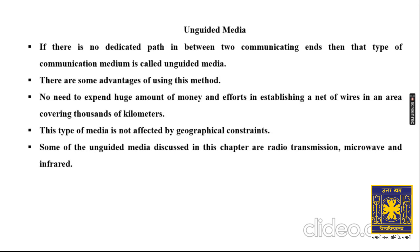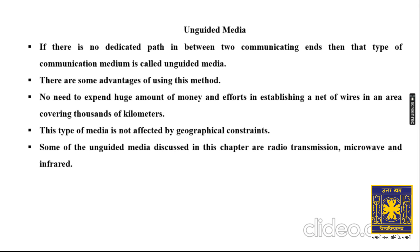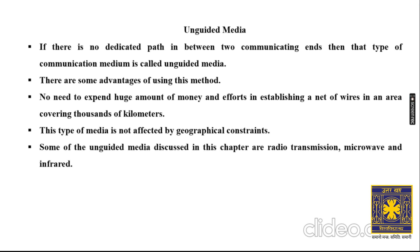We move to the next part of the lecture: unguided media. Unguided media is the media where you cannot see any medium of communication — the communication is done via air. There are many types present in the air: it can be a radio signal, it can be a microwave, it can be infrared. So a lot of unguided media is present in the air.